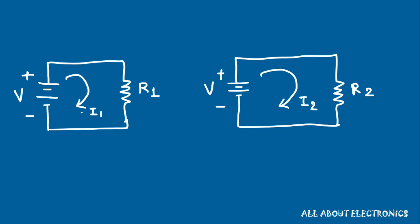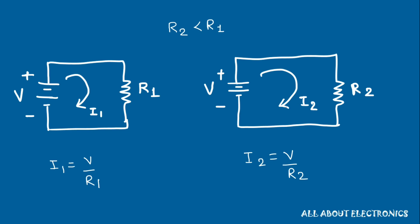Let's correlate this with an electrical circuit. We have two electrical circuits with the same voltage sources but different resistance values — R1 in the first and R2 in the second. According to Ohm's law, the current in the first circuit is I1 = V/R1 and in the second is I2 = V/R2. Since R2 is less than R1, more current flows through the second circuit, so I2 is greater than I1.